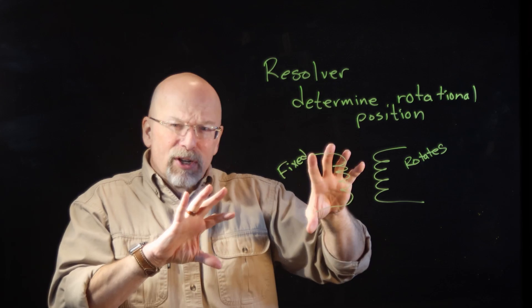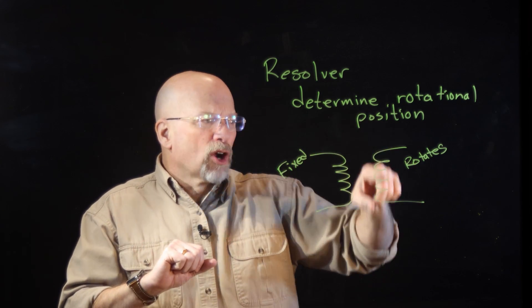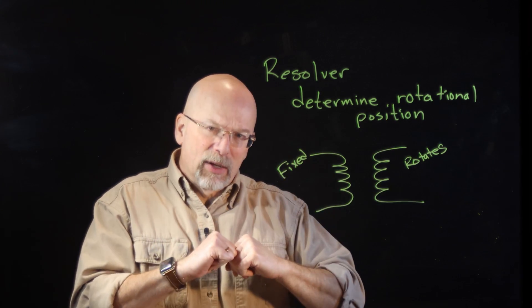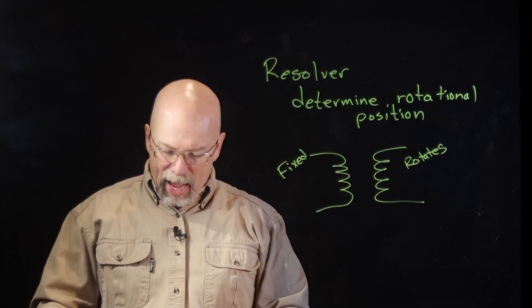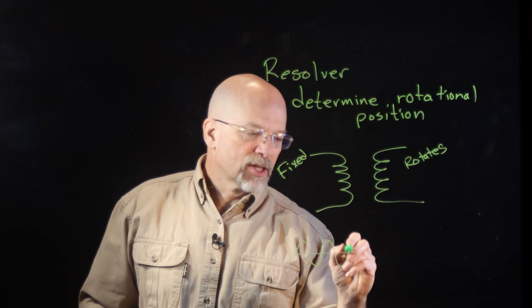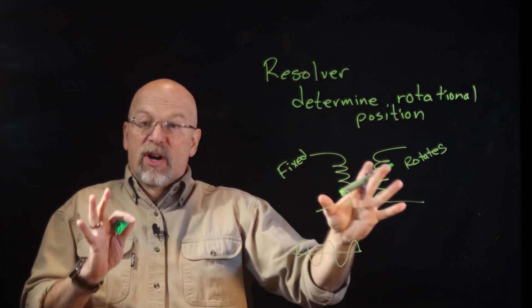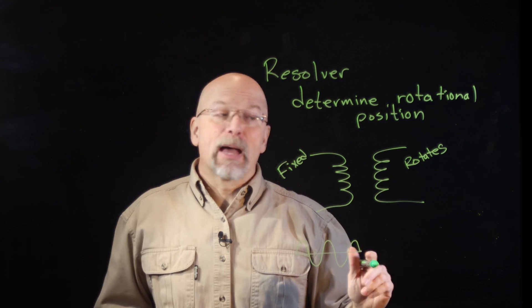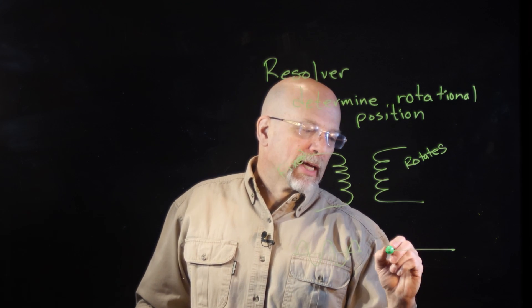Now the electrical fields that are being generated by the fixed one are passing through the rotating one. And if they're lined up, what you've got is something like this. And on the fixed side, we're just going to have a sine wave, just generating a sine wave that's supposed to be captured by the one that's rotating.